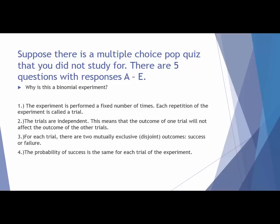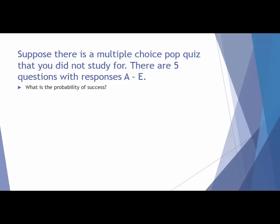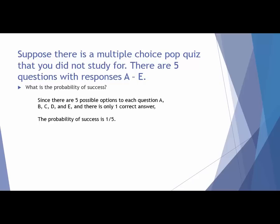The fourth criterion is that the probability of success stays the same. There are A through E options, and only one of those is correct. You have options A through E, giving you a total of five, and there is only one correct answer. So your probability of success is one out of five.